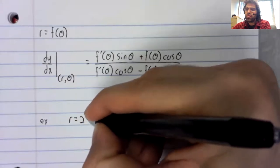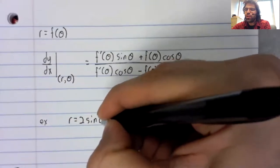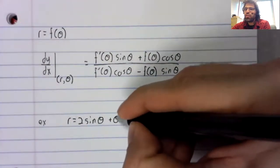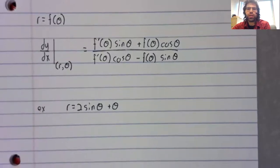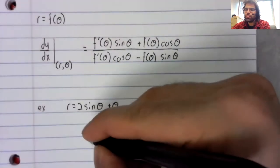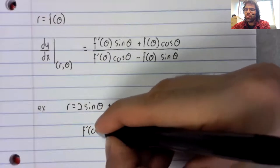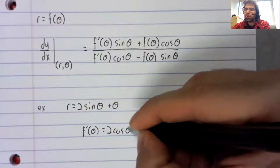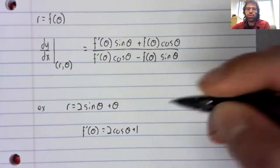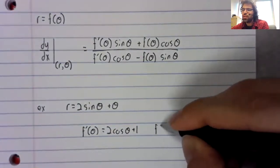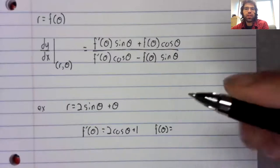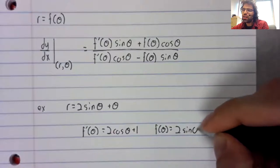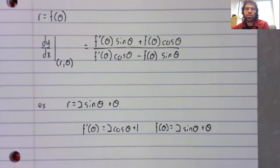So if we let r equal 2sin(θ) + θ, for example, then f'(θ) is 2cos(θ) + 1, and f(θ) is 2sin(θ) + θ.